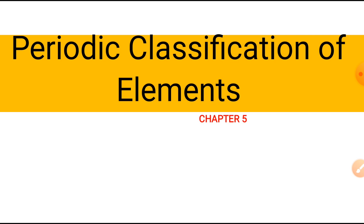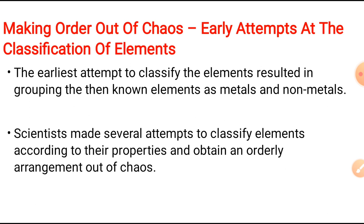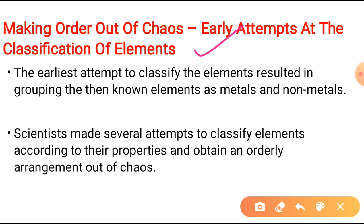Let's start. First of all, we will understand the earlier attempts at classification of elements. The heading says: 'Making order out of chaos — early attempts at the classification of elements.' Several attempts have been made to classify elements according to their properties. The earliest attempt to classify elements resulted in grouping the then-known elements into metals and non-metals.